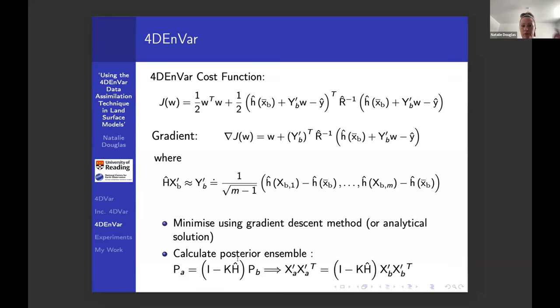One of those being the fact that you can now actually update the ensemble by borrowing a result from the ensemble Kalman filter. They have an update to the error covariance matrix, so you can get the uncertainty information in your posterior estimate. There's a lot more linear algebra that goes on here, but essentially you make this assumption, do some linear algebra here, and then you're able to do a square root of a matrix to get an update to the ensemble to find your analysis.